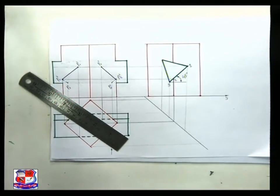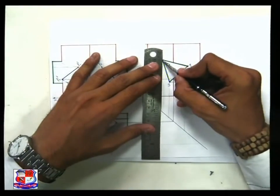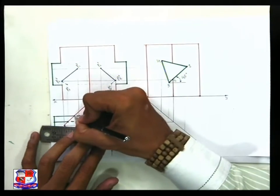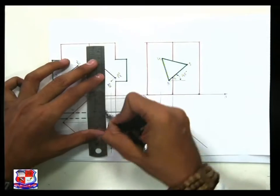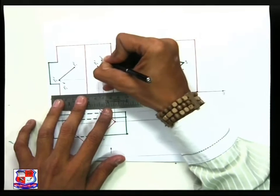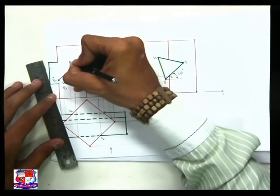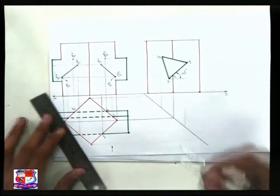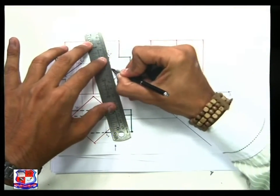Now for point number four — point number four is here. Draw a vertical line and a horizontal line from point number four; it will cut the red square at a certain point. Draw a straight vertical line from point four and a straight horizontal line, and both will meet at point p4 dash. Similarly, from here, a vertical line gives point p4 dash. Since p4 to p3 is away from us, it is not visible, so join them with a dotted line.